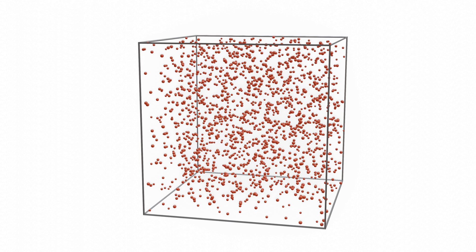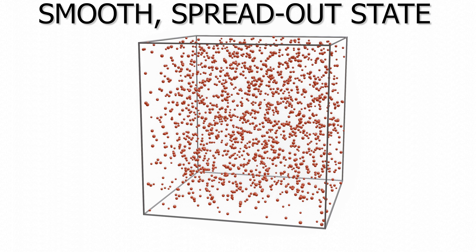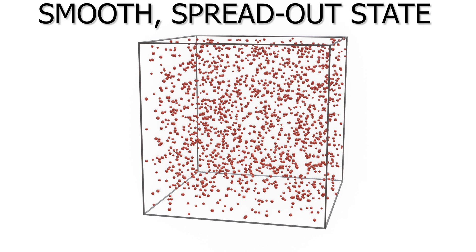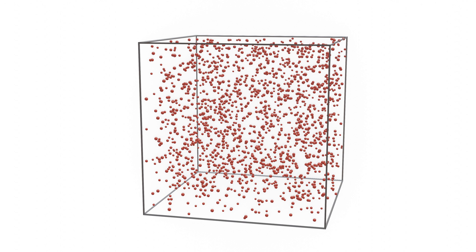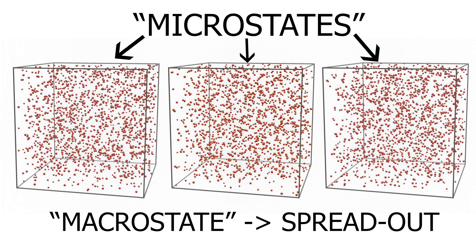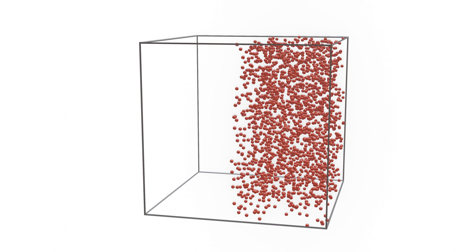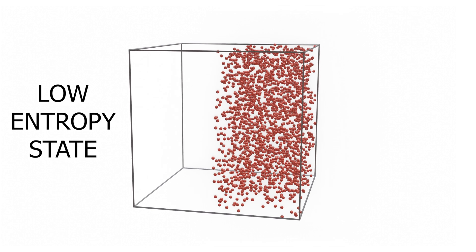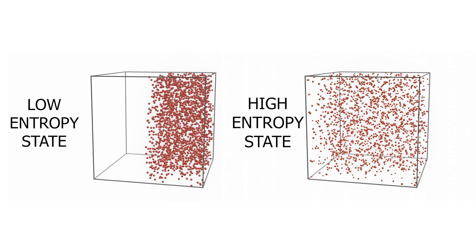Let's say you have a box with some particles. If these particles have energy, the particles would usually tend to a smooth, spread-out state. It won't matter if the particles are arranged like this or like this — it is still counted as a spread-out state. These particular configurations are known as the microstates, while what it overall looks like is known as the macrostate. Now, if there is a great difference in the macrostate, it is known as a low-entropy state, and a smooth macrostate is considered a high-entropy state.